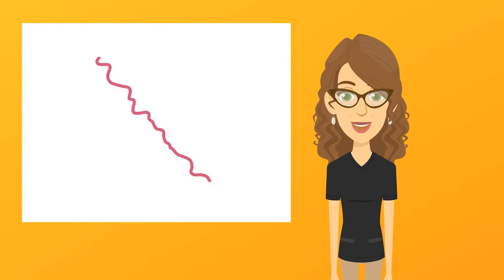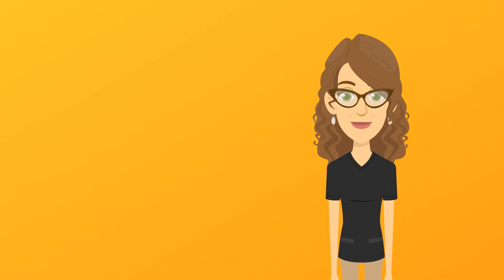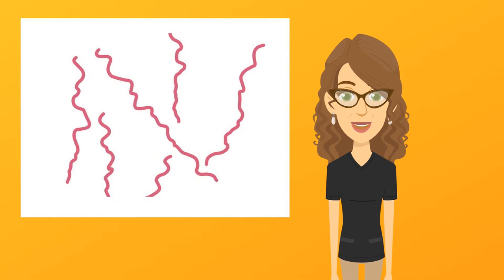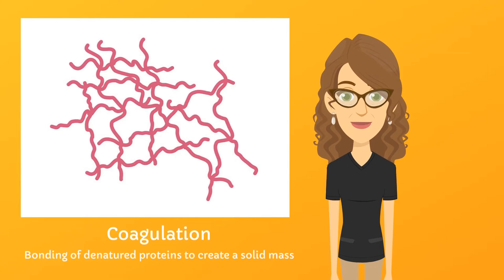When the internal bonds of a protein are broken, the strand relaxes and uncoils. This change from its natural state to a different form is called denaturing. The new shape allows individual protein strands to get together and form bonds with each other, forming a criss-cross network. When this happens with eggs, they're changed from a liquid into a solid mass or gel that you can pick up with a fork. This transformation is called coagulation — the loner molecules have bonded together and formed a group.